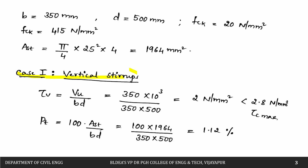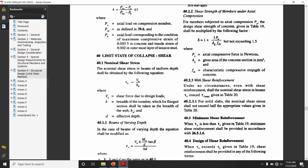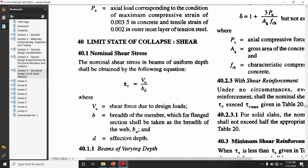For Case 1 — vertical stirrups — first calculate the nominal shear stress: τv = Vu / (b × d) = (350 × 10³) / (350 × 500) = 2 N/mm². Referring to IS code Clause 40 (limit state of collapse), τv = Vu / (b × d) for uniform depth beams.